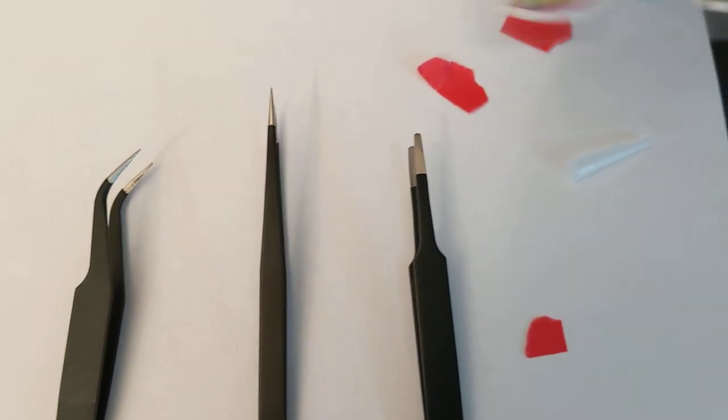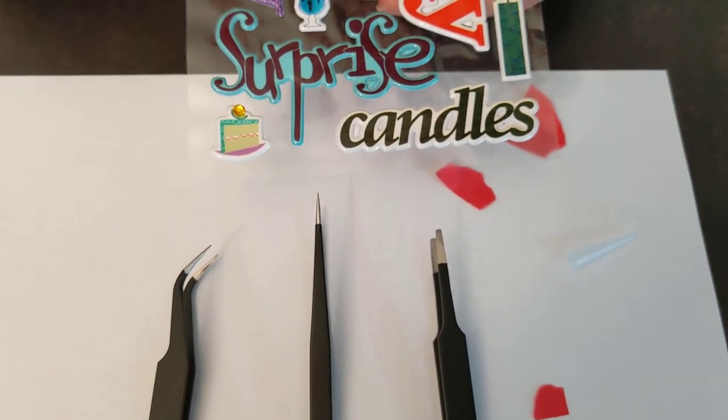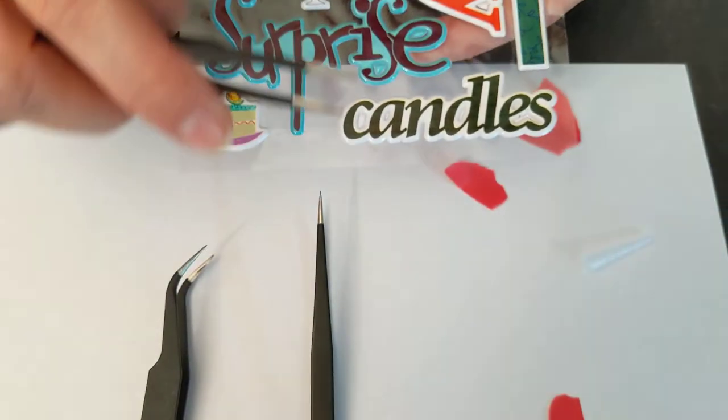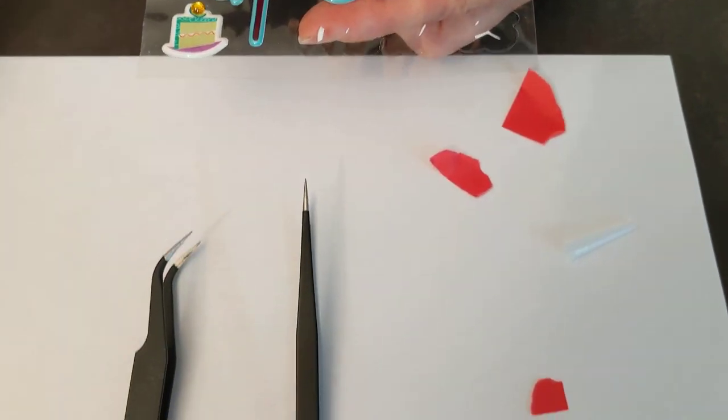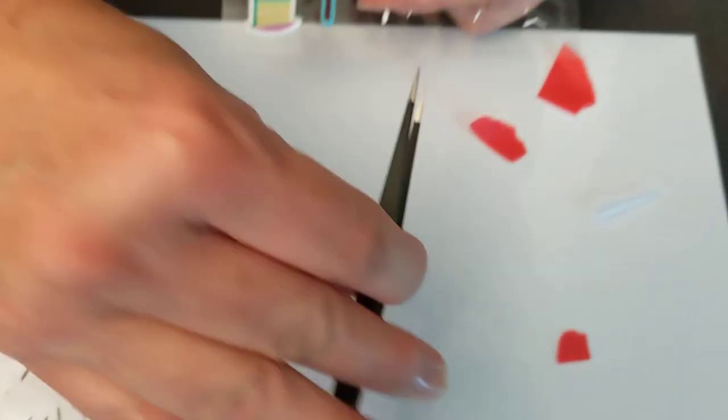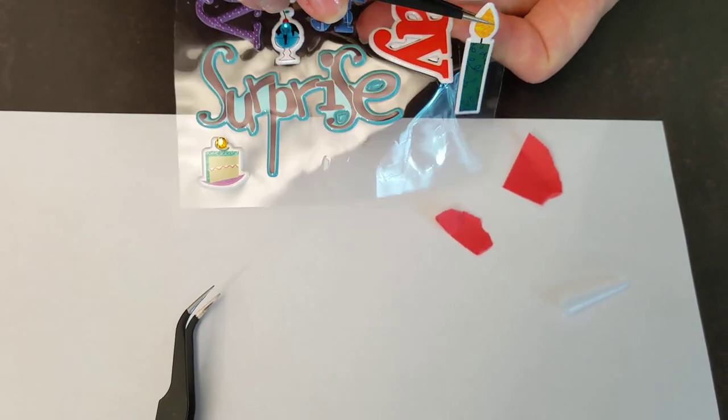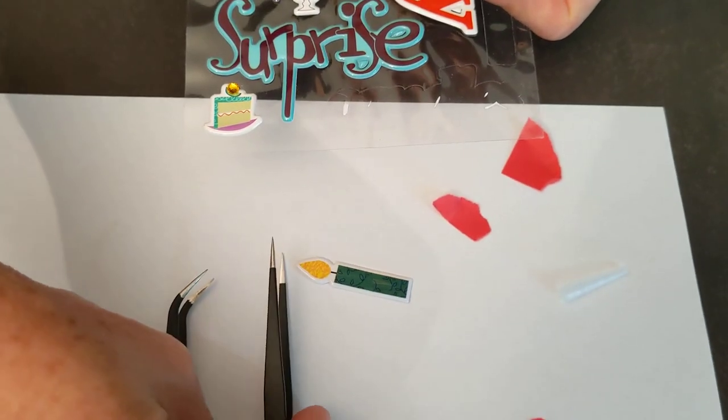Now some people like to use their tweezers to pick up the rhinestones or pick up stickers off of a sticker sheet and you can certainly do that. That would be the duck bill and then I'm going to use the precision point as well to go ahead and pick that up. Either one of them works just fine. That's just a sticker.